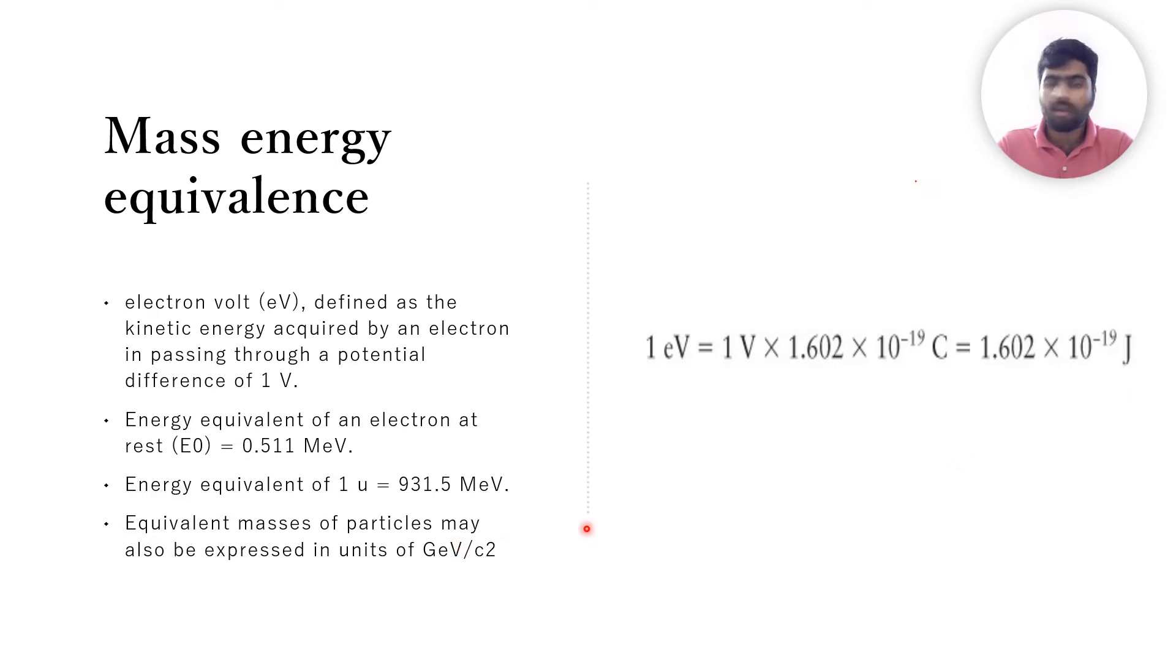Now let's talk about some useful constants. Energy equivalent of an electron at rest, E naught, is equal to 0.511 MeV. Energy equivalent of one atomic mass unit is equal to 931.5 MeV. Equivalent mass of particles may also be expressed in units of GeV by c squared. This comes from Einstein's equation, E equals mc squared. If you substitute it with electron volt, you will get the equation of GeV by c squared.